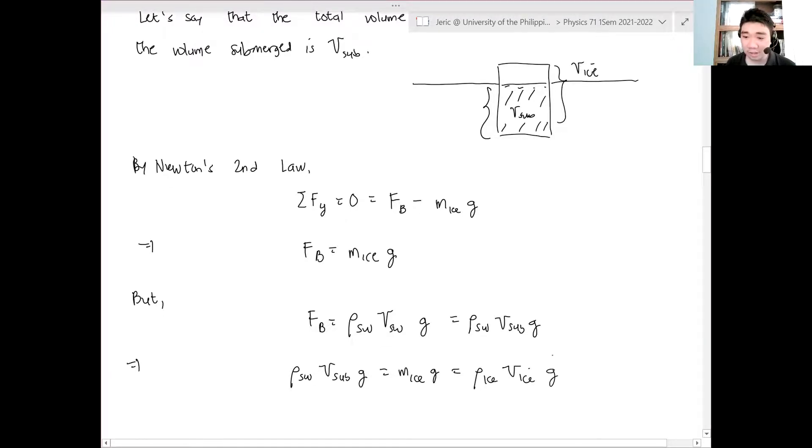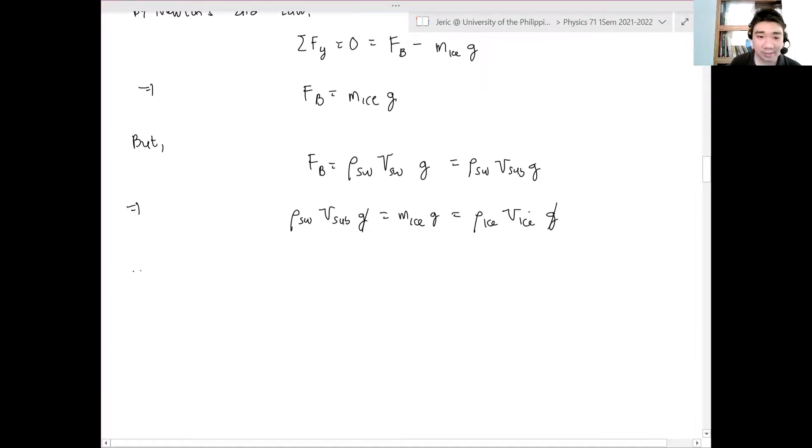Hence, the g's here will cancel. And therefore, I can write this now as density of seawater over density of ice. Let me rearrange this. Volume sub over volume of ice is equal to the density of ice over the density of seawater.